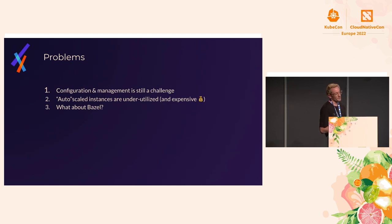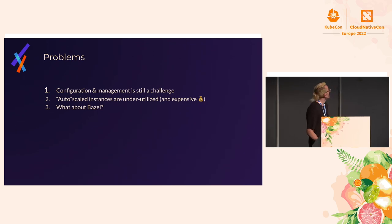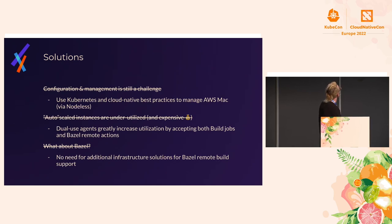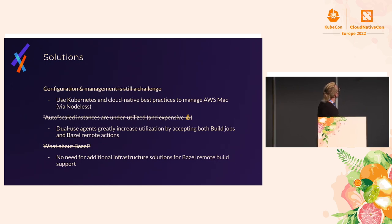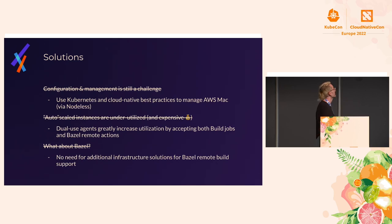To recap the problems we've seen while adopting Mac compute: one, configuration management — while easier, it's still a challenge. Two, auto-scaled instances are underutilized and expensive. Three, what about Bazel? Some solutions we've come across: for configuration management, why not use Kubernetes and cloud-native best practices to manage these AWS Macs — that's where the Elotl solution comes in. For underutilized instances, one hack is utilizing the same workers both as CI runners and for executing Bazel remote actions, so underutilized CPUs can join the remote build farm when not actively running CI jobs.